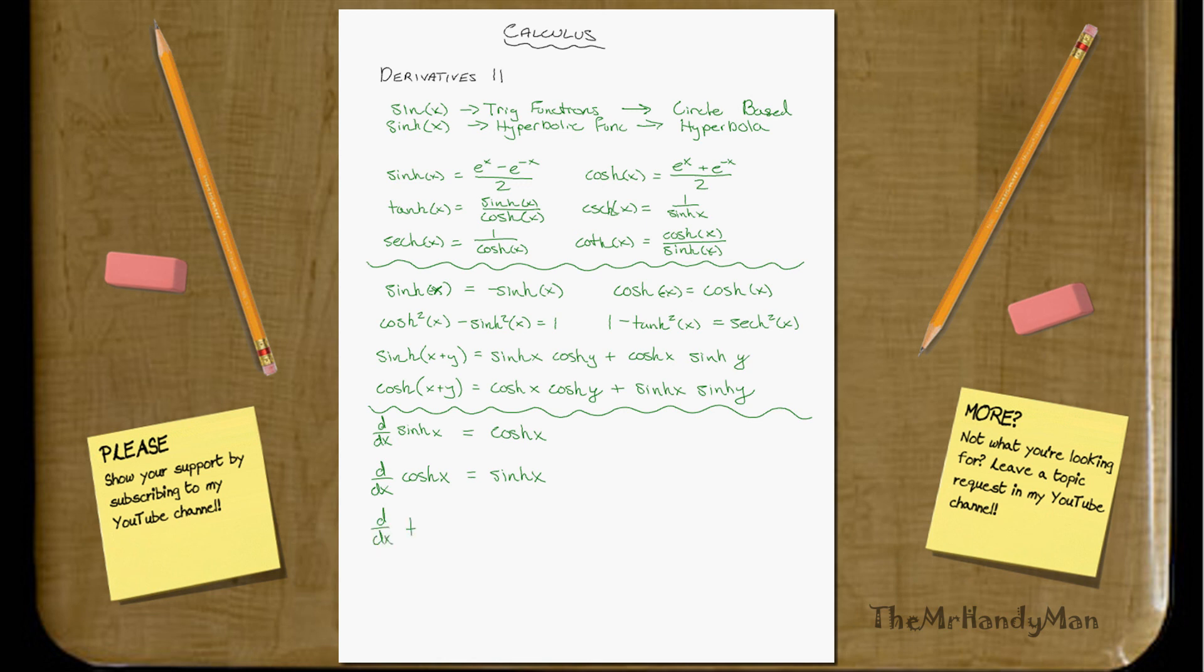Let's continue. d over dx of tanh x. That equals sech squared x. And let's finish up with the odd three.